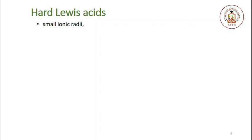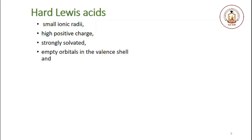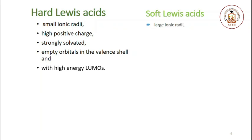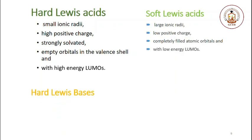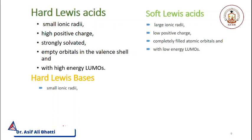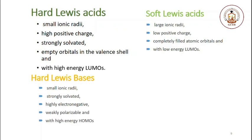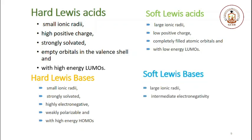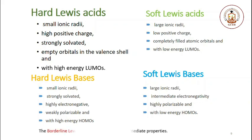Hard Lewis acids are small in ionic radii, highly positively charged, strongly solvated, highly electronegative, weakly polarizable, and have high energy HOMOs. On the other hand, soft Lewis bases are large in ionic radii, have intermediate electronegativity, are highly polarizable, and have low energy HOMOs. Borderline Lewis acids and bases have intermediate properties.